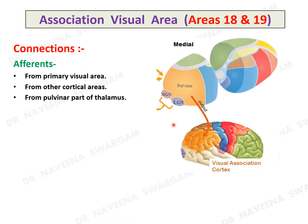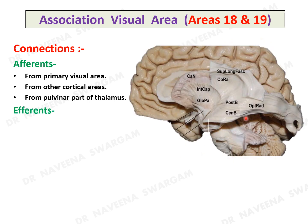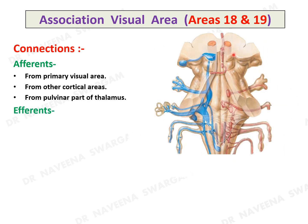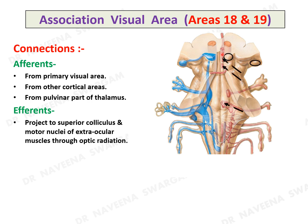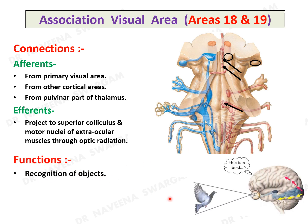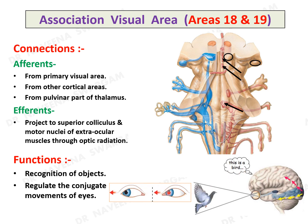Connections of the association visual area: it receives afferents from the primary visual area, other cortical areas, and the pulvinar of the thalamus. Efferents pass through optic radiation and reach the superior colliculus through the lateral geniculate body, and are connected to the motor nuclei of the extraocular muscles — the nuclei of the 3rd, 4th, and 6th cranial nerves. It recognizes objects and also regulates conjugate movements of the eyes.